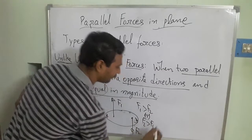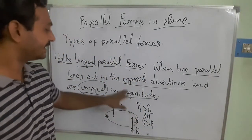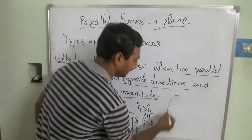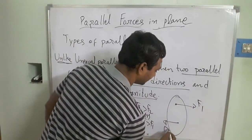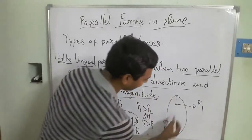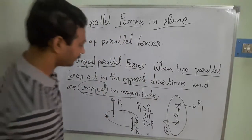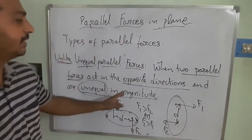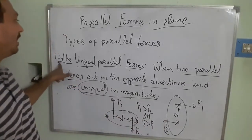These two forces are not equal in magnitude and at the same time they are moving in opposite directions. They always maintain the same constant distance throughout. Because they are in opposite directions and unequal in magnitude, we call these unlike unequal parallel forces.